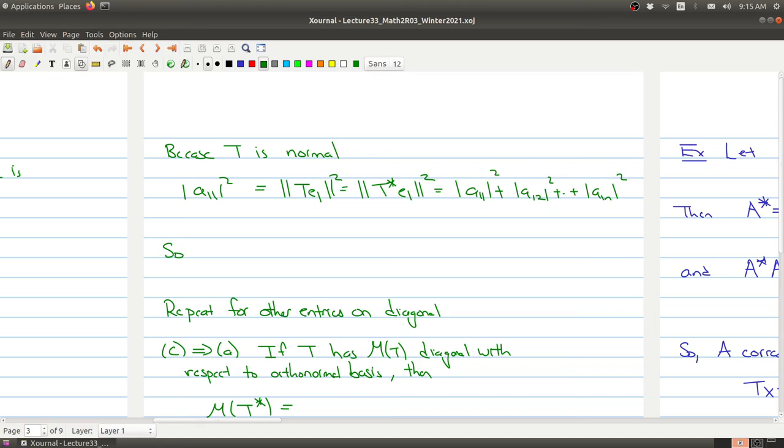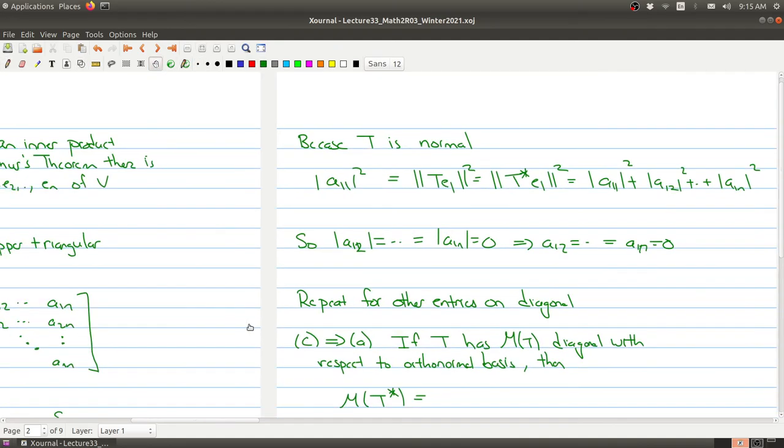But now these are both non-negative numbers. So all of these numbers here have to be zero. So we get that A12 up to A1n is all equal to zero. And this happens then if A12 up to A1n is zero. So going back to my matrix over here, what we've shown is that all of these guys here are equal to zero.